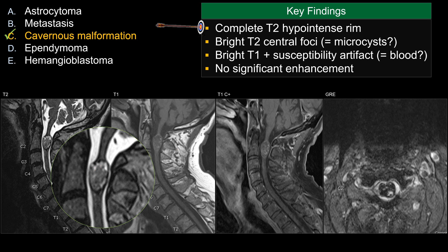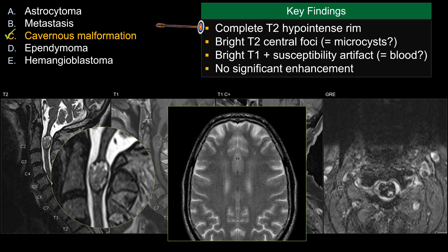Another exercise I like to do is imagine placing this lesion elsewhere — say in the brain — and imagine what it would look like, as that can help with your differential diagnosis. In this case, if I take this core lesion and place it on an MRI of the brain, and you describe a lobulated lesion with a bright T2 center with a complete T2 hypointense rim, that sounds like and looks like cavernous malformation in the brain.